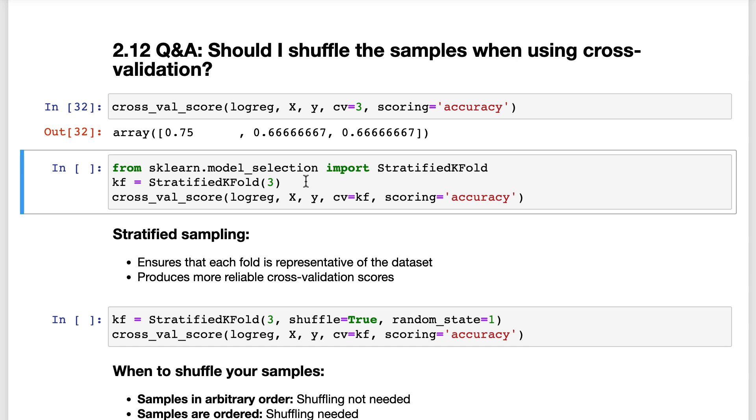We create an instance of this class and pass it a 3 so that it will create 3 folds. And then we can pass this instance to cross-val score instead of an integer.